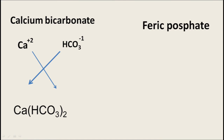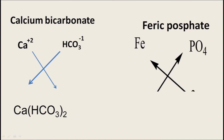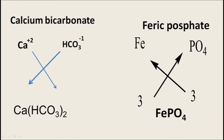The next compound is ferric phosphate. Ferric Fe has charge +3 and phosphate PO₄ has charge -3. Here both radicals have charge 3, so it becomes common and cancels. The molecular formula becomes FePO₄.